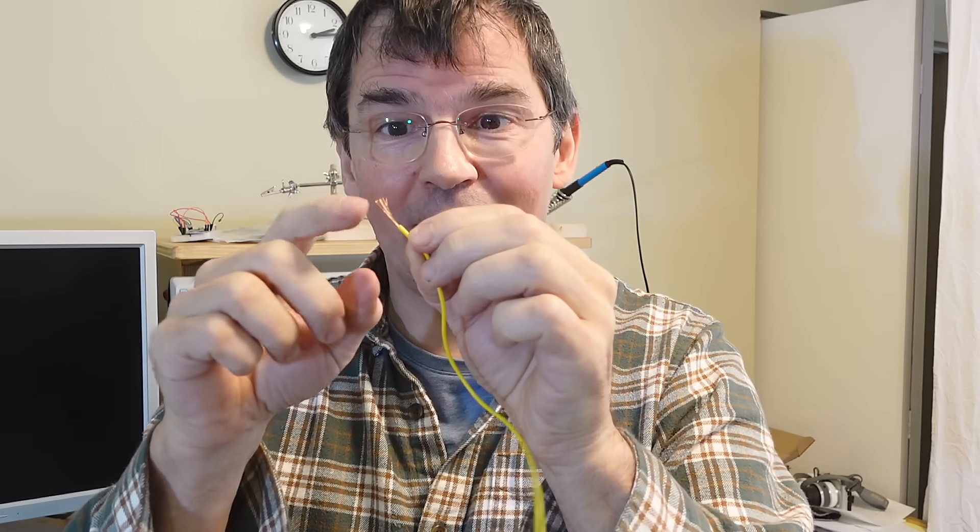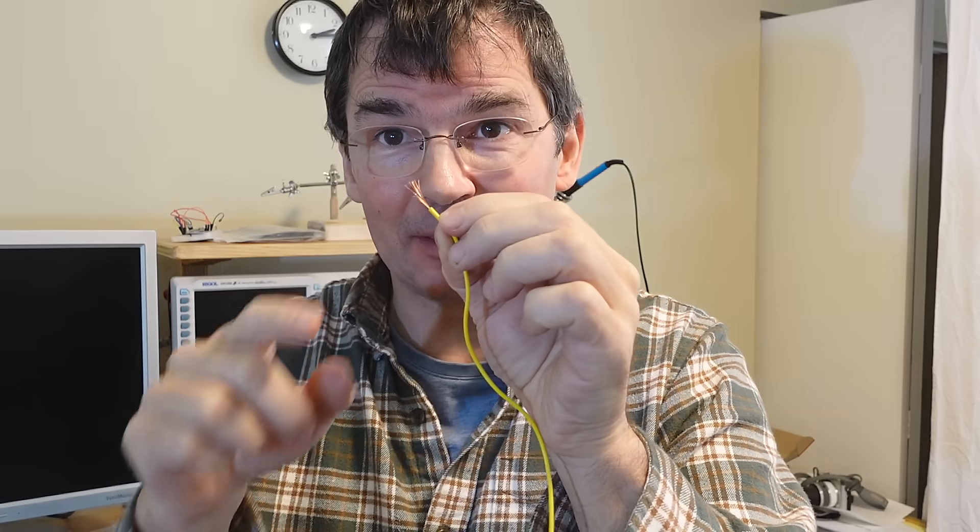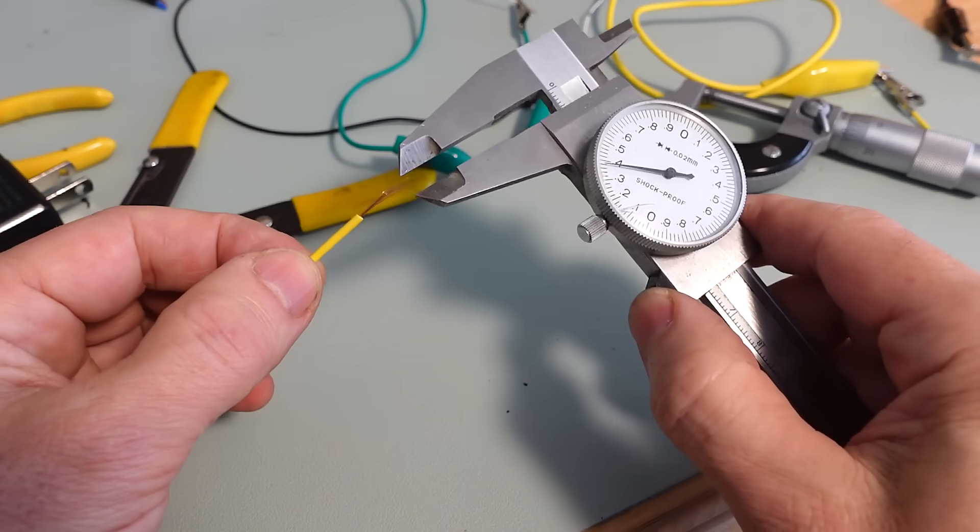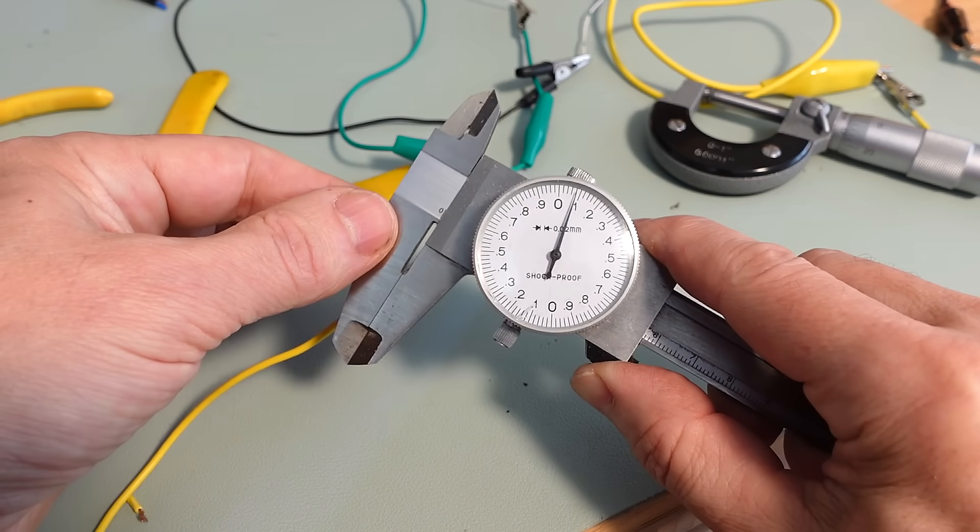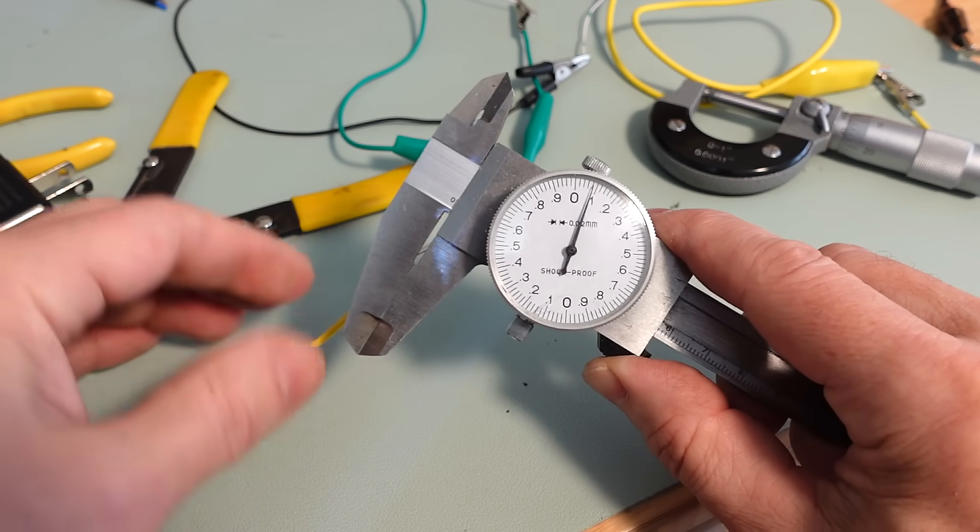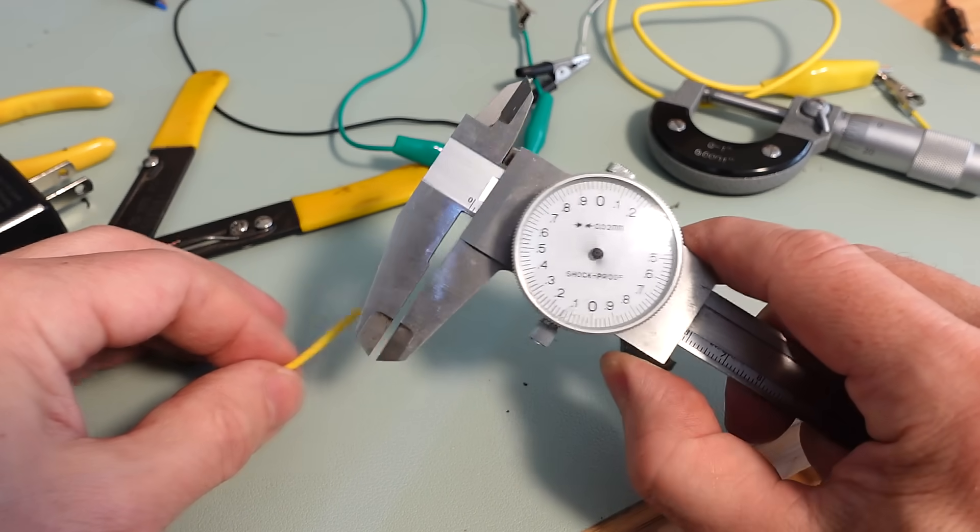I just stripped the part that I took out. It's got really thin leads. So, let's check that. This is a metric dial indicator caliper. It looks like those wires are about 0.08 millimeters in diameter.